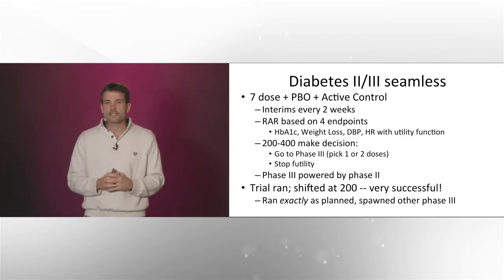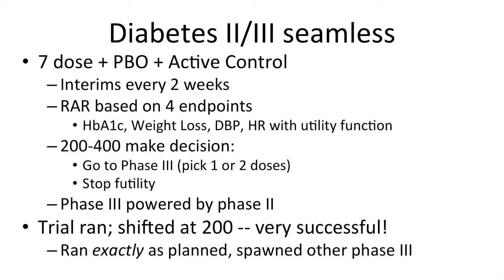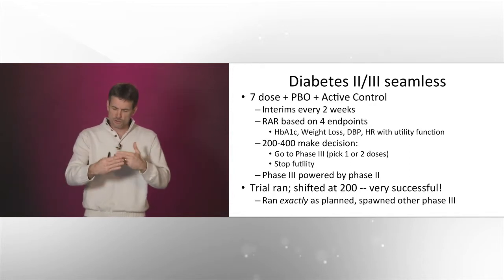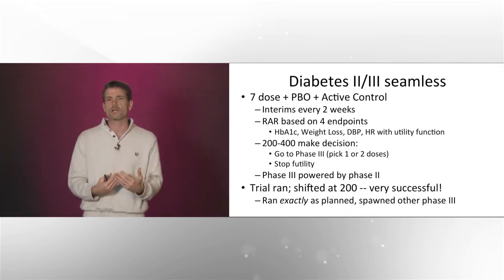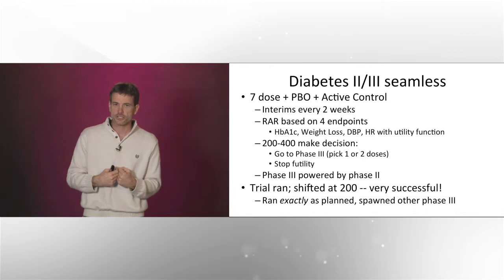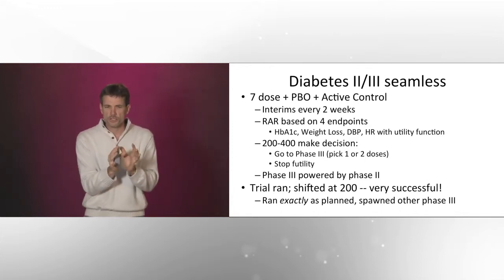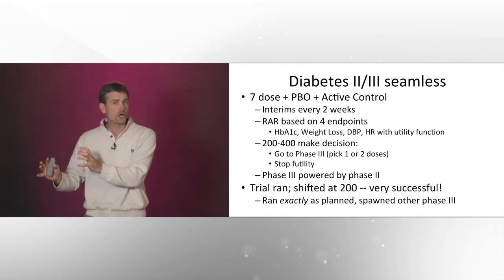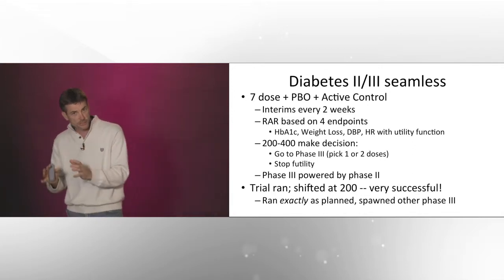A diabetes phase 2-3 seamless trial is another example. This trial started with three doses and three months of treatment. Through simulation we turned it into a phase 2-3 design with seven doses instead of three, plus a placebo and an active control. We do interim analyses every two weeks during the trial with response adaptive randomization to doses performing better. We defined 'better' using a utility function. As we stressed this in simulations, it became clear there were four critical outcomes to monitor. We had rules to decide when it moves to phase 3, allowing one or two doses to advance, and the trial could stop for futility if things weren't going well.